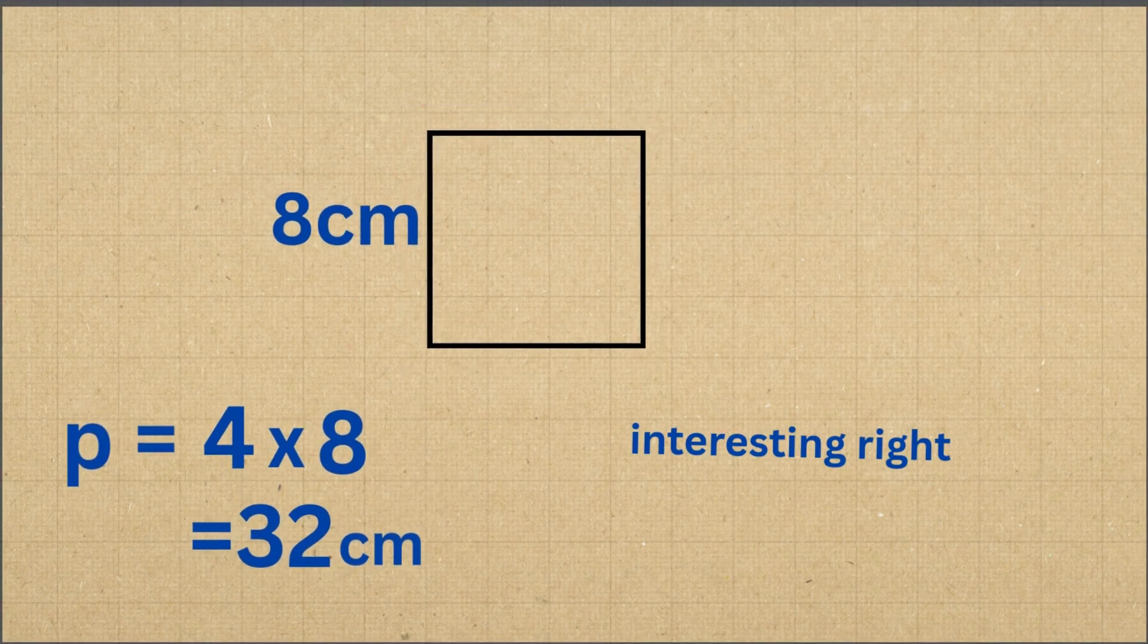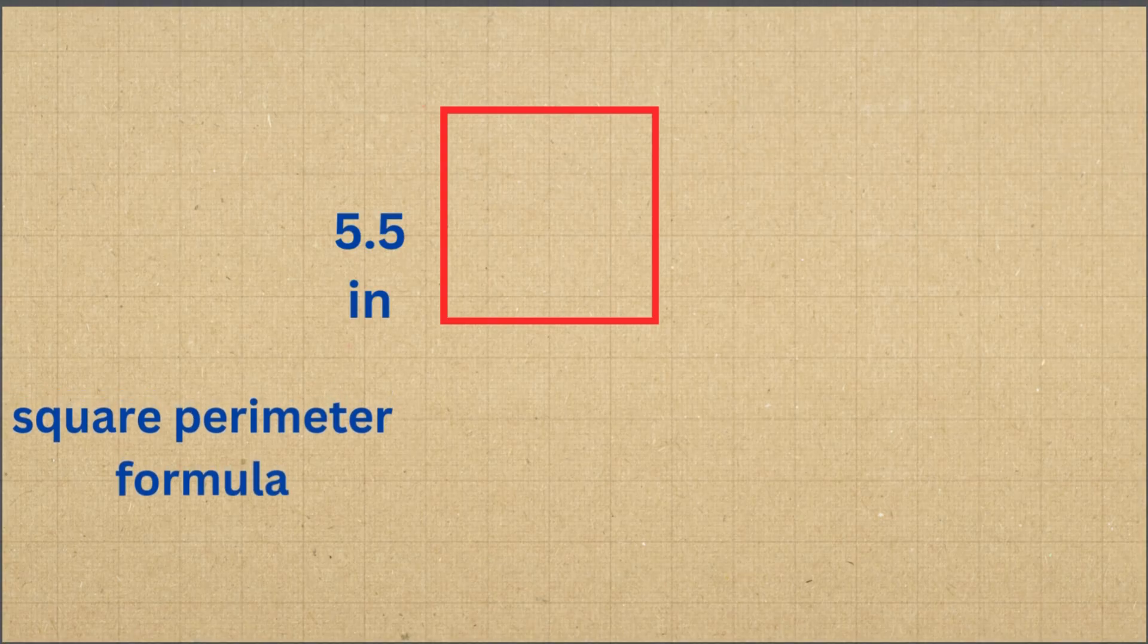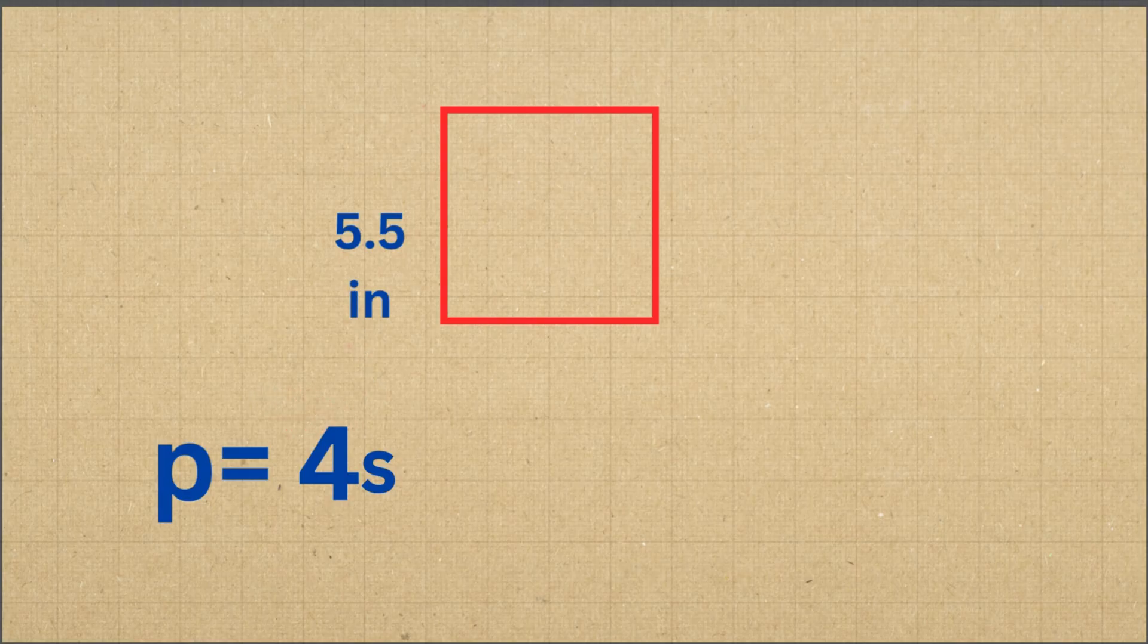Getting interesting right? Here is another one. A square has a side length of 5 and a half inches. To find the perimeter, we use the square perimeter formula. The perimeter of a square is found by multiplying 4 by the side length. Now let's apply this formula.